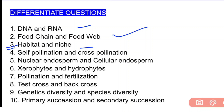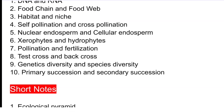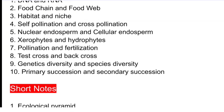The next important long-type question is xerophytes and hydrophytes — differentiate xerophytes and hydrophytes. The seventh important long-type question is pollination and fertilization.